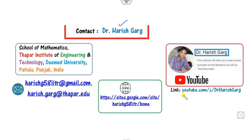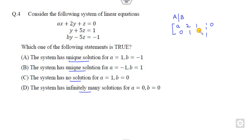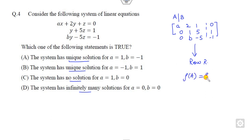I'm Dr. Gar — you can simply follow the link for finding various videos related to these previous year papers. Now, whenever you think about unique solution, no solution, or infinite many solutions, you may think to write this in terms of the augmented matrix — like [a, 2, 1, 0 | 0, 1, 5, 1 | 0, b, -5, -1] — and then use row-reduced form to find the rank of A versus the rank of B.